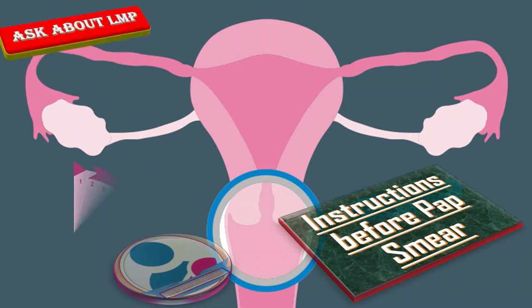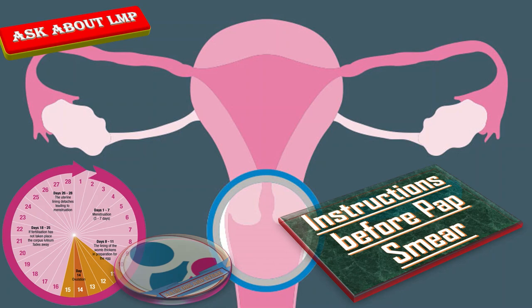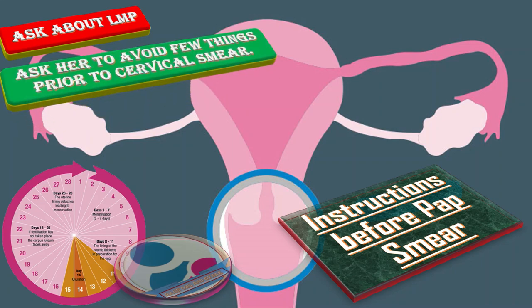What instructions do we need to give to the patient before performing pap smear? First, ask about LMP. Ideally, the pap smear is done when the patient is not menstruating. Secondly, ask her to avoid few things prior to cervical smear, like vaginal intercourse, douching, use of tampons, and contraceptive cream about 24 to 40 hours before pap smear.